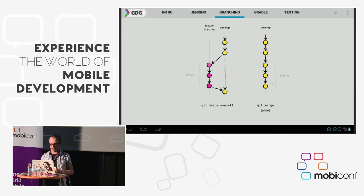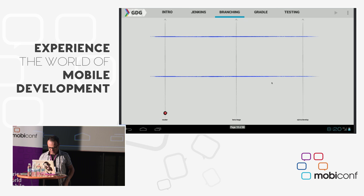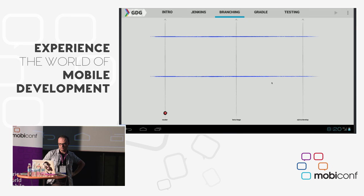This comes into play with Jenkins because we can automate all those things to make release notes. Working with something like Scrum or Kanban, each sprint is represented by a development phase and a stabilization phase.